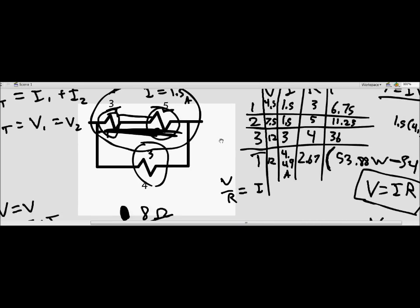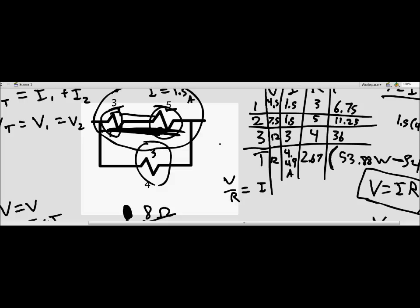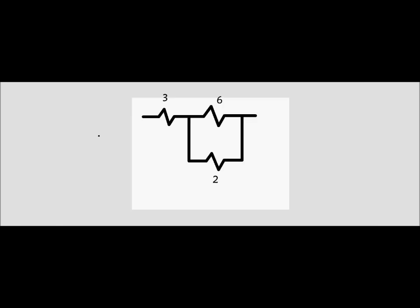I'm going to be moving fast through these, but they all use basically the same ideas. The problems do get more and more complex but it's still just the basic concepts. In problem number four we're given a circuit with a three-ohm resistor in series with a parallel portion containing a six-ohm resistor and a two-ohm resistor. We're told that the voltage drop is 12 volts.